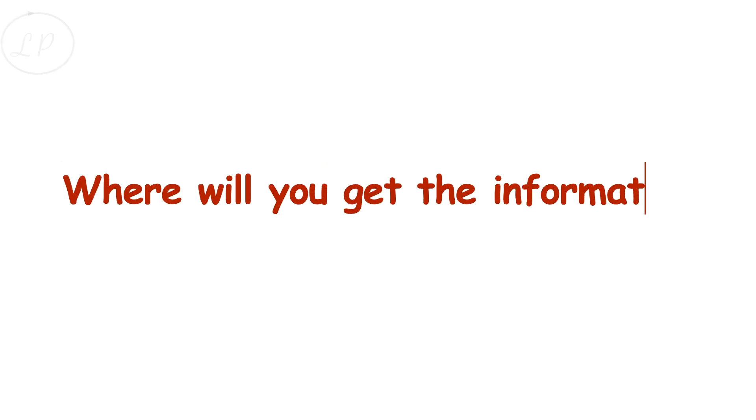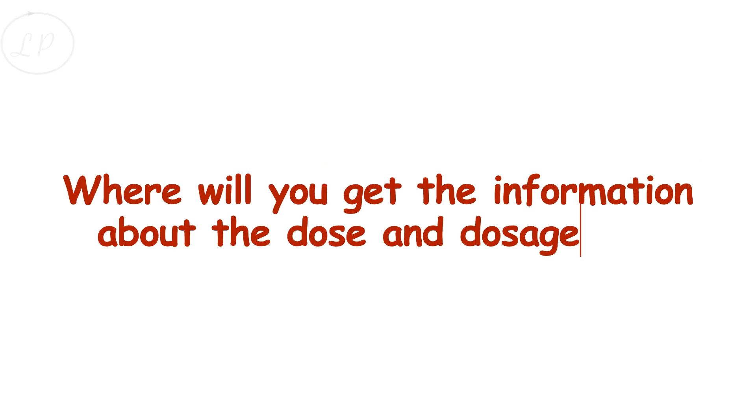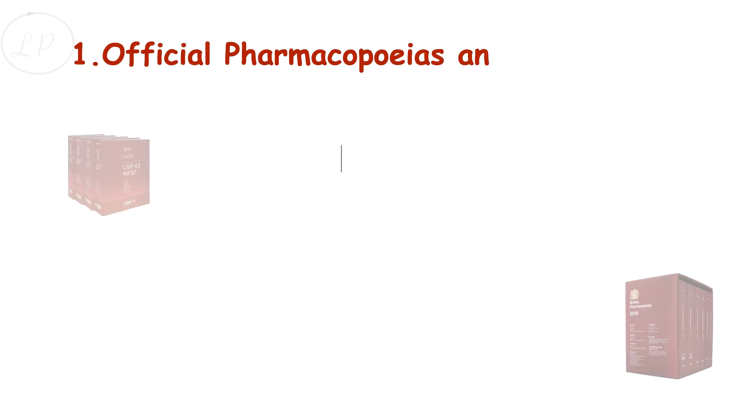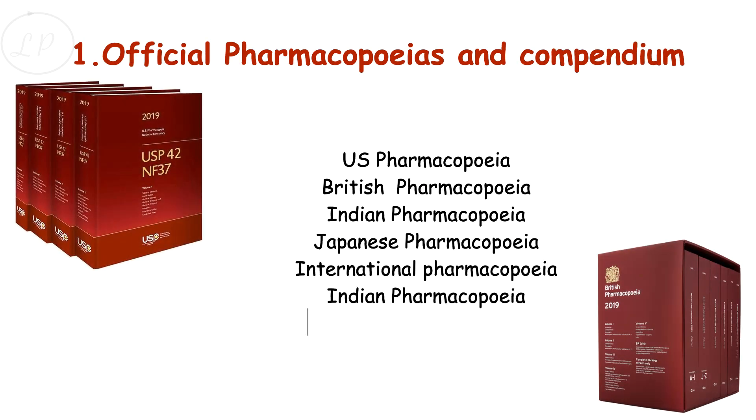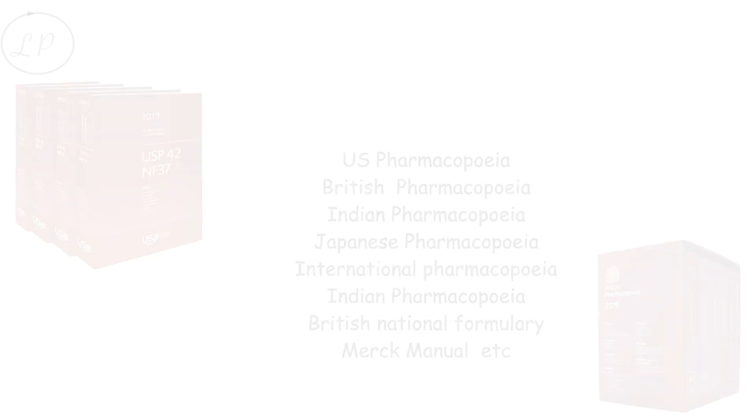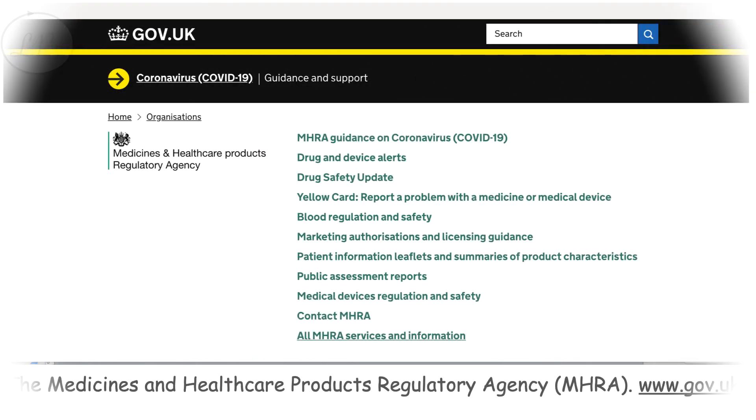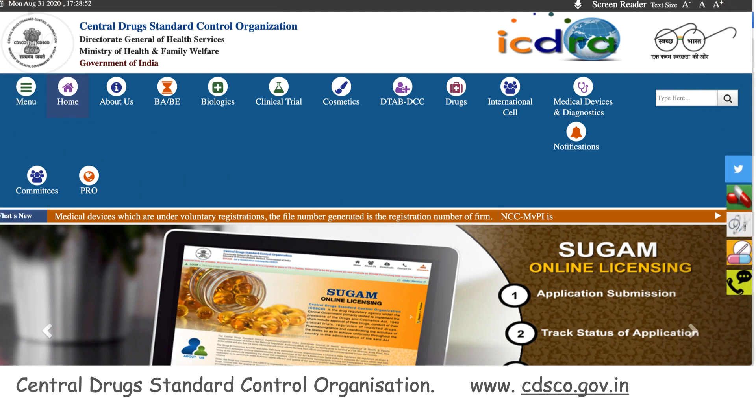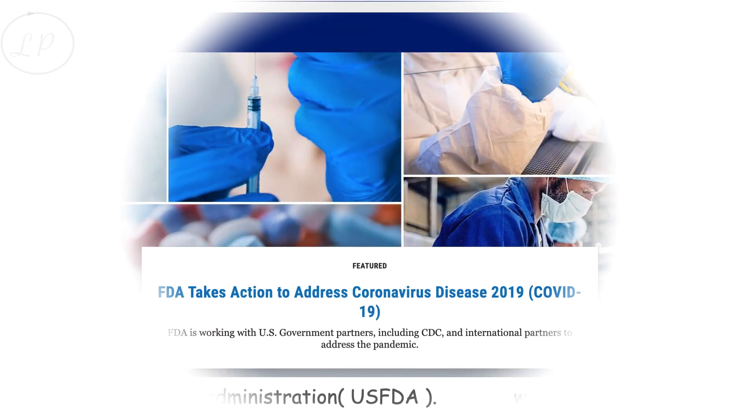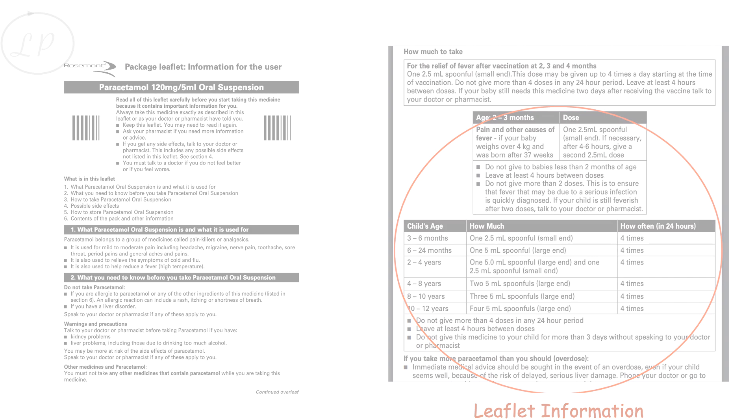Where will you get the information about the drug dose and dosage? You can get it from official pharmacopoeias and compendium, official drug regulatory websites of countries, leaflet inserts of the dosage form, and widely accepted drug reference books.